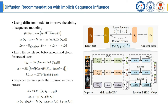Secondly, we define the MCRL module, which utilizes CNN to extract multiscale local features of sequences with convolution kernel sizes of 1, 3, and 5. The output features are input into the residual LSTM for global learning, and the fully connected network is used to obtain the feature H.